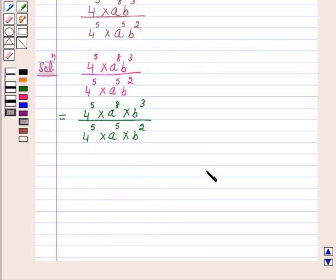Now we know that a raised to power m divided by a raised to power n is equal to a raised to power m minus n.